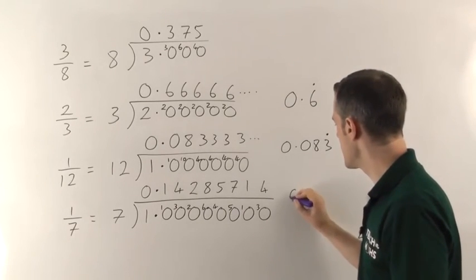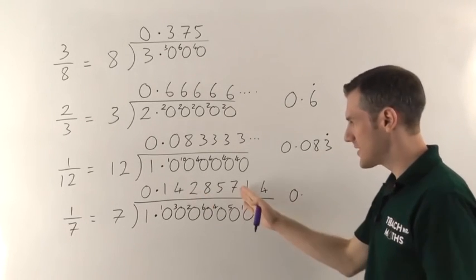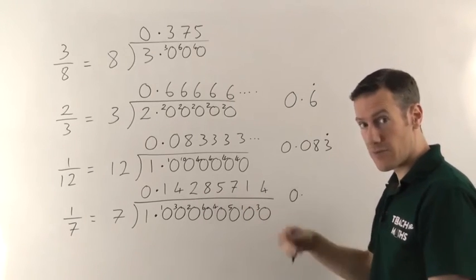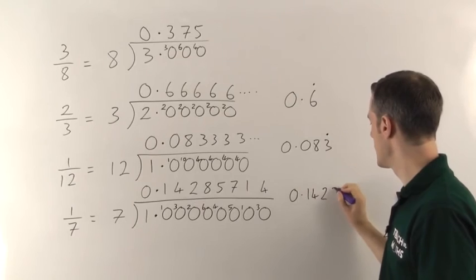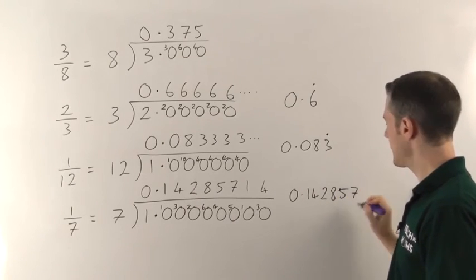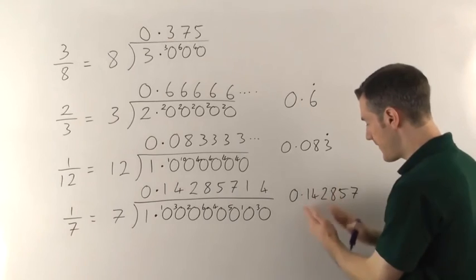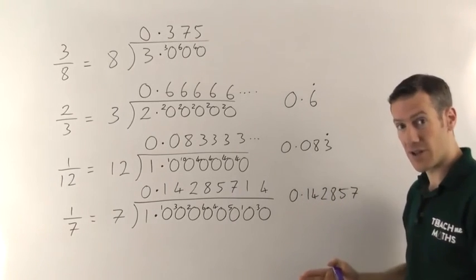Well, it's going to be 0. You write out all the digits that are going to repeat. So 0.142857 and then you stick a dot above the first and the last digits of the ones that are going to repeat.